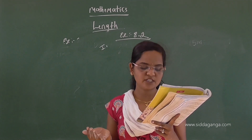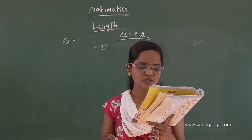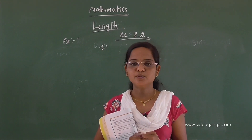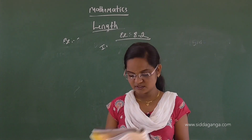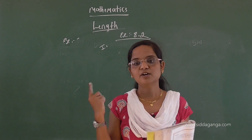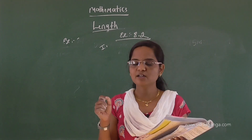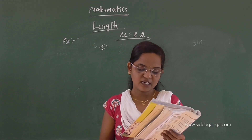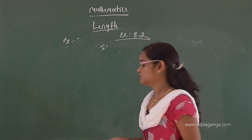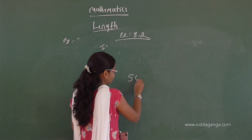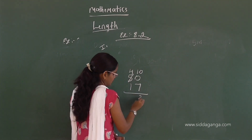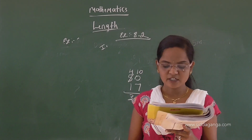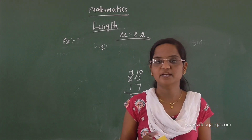Second question: out of a roll of cloth measuring 50 meters, 17 meters of cloth is sold. Find the length of remaining cloth. 50 minus 17 equals 33 meters. So 33 meters of cloth will remain.